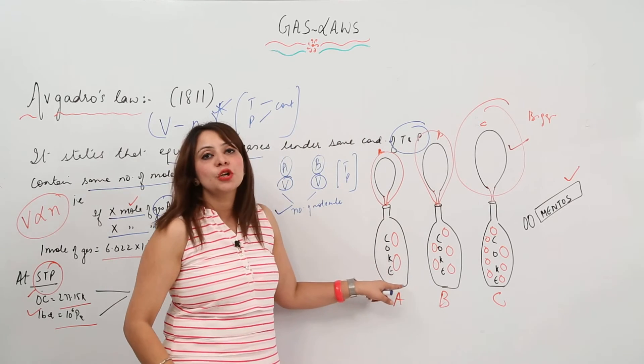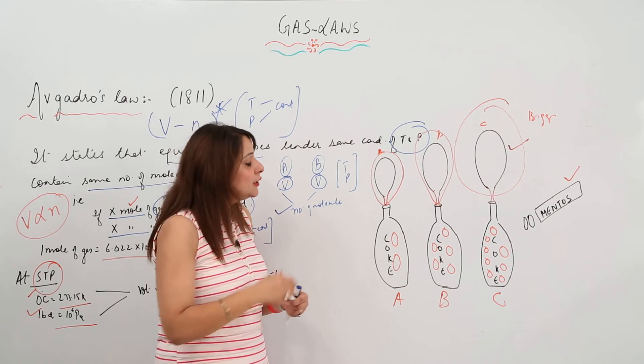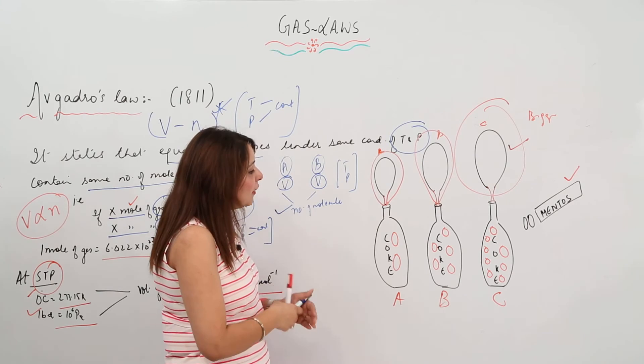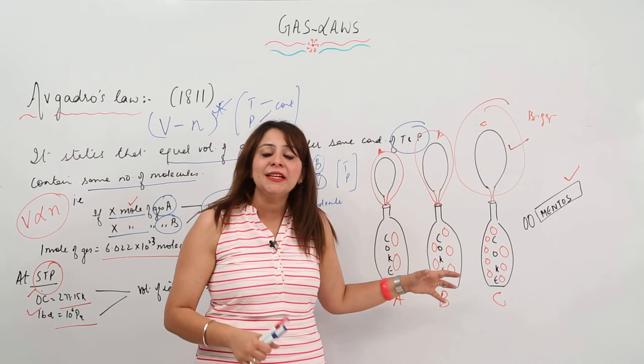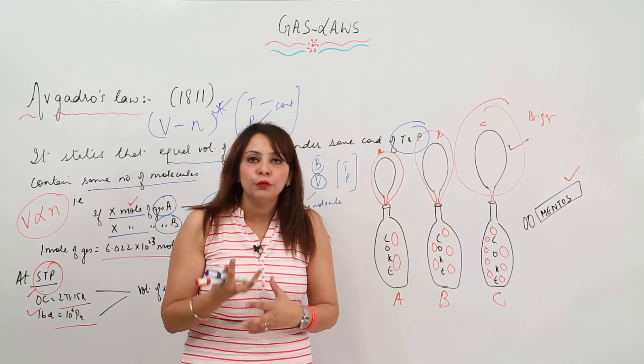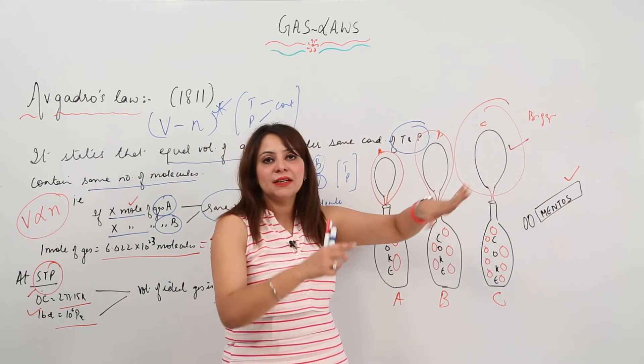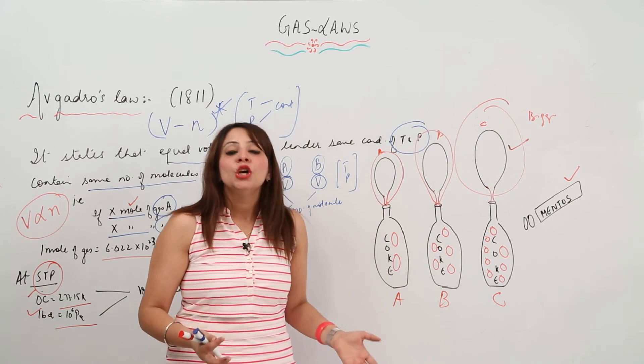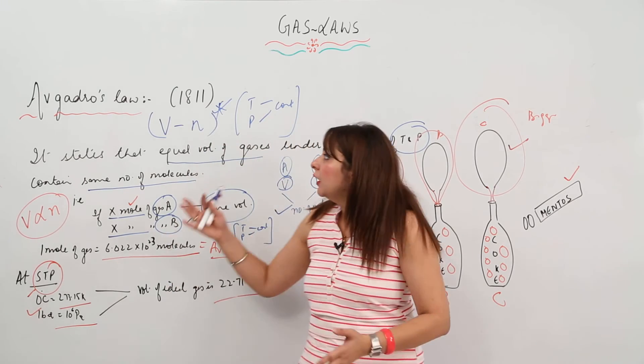So this shows that when you have more moles, there is more gas, which means more volume. That is why the balloons get bigger in size. This is what Avogadro's Law demonstrates.